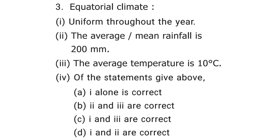The third question is about equatorial climate. Statement 1: uniform throughout the year. Statement 2: the average or mean rainfall is 200 mm. Statement 3: the average temperature is 10 degrees Celsius. Of the statements given above, option A — the first one alone is correct — is the answer.